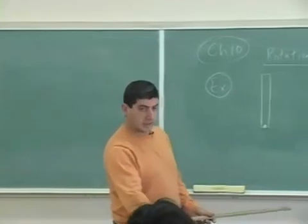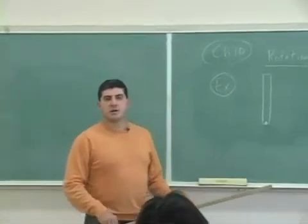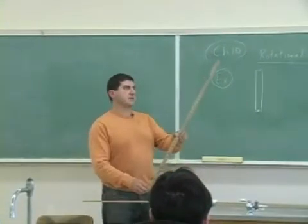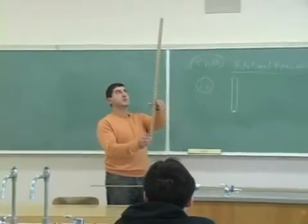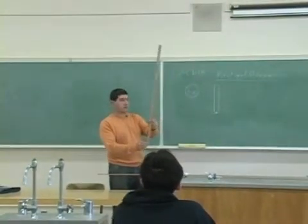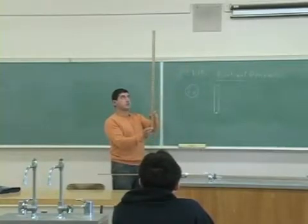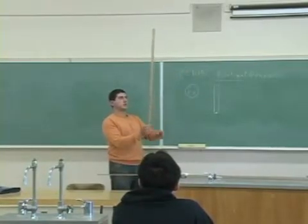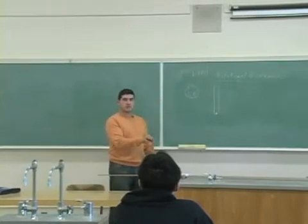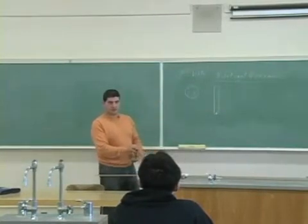So the kind of situation that I'm describing would look like something like this here. We have a, this one would be a uniform rod and then we'll do one where it's not uniform. You can pivot it about the end point here and then you could let it go and then it falls like that. So we want to do the dynamics of something like that.